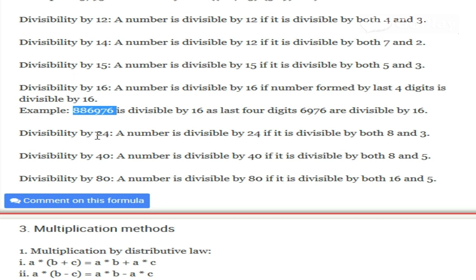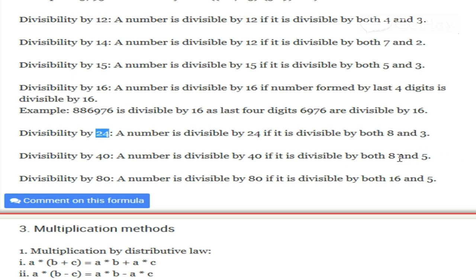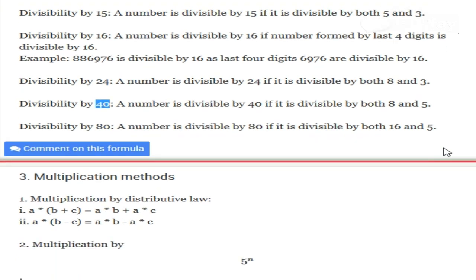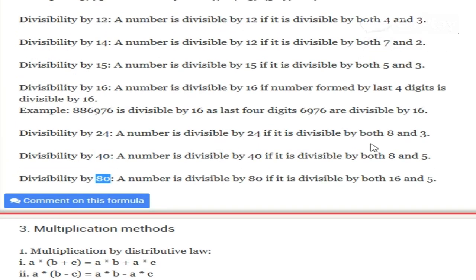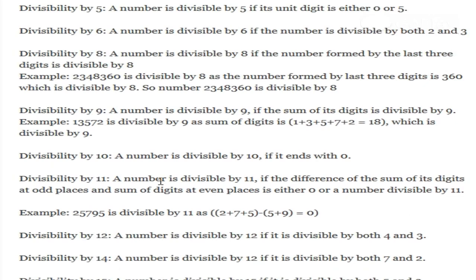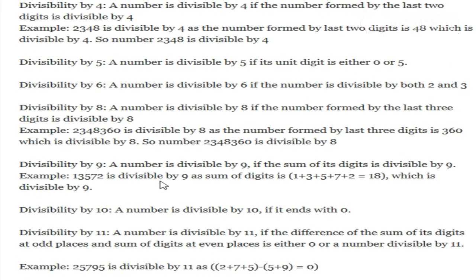To check if a number is divisible by 24, we check it for both 8 and 3. If a number is divisible by both 8 and 3, it will be divisible by 24, since 8 times 3 equals 24. For 40, the number should be divisible by both 8 and 5, since 8 times 5 equals 40. And if a number is divisible by both 16 and 5, it will be divisible by 80, since 16 times 5 equals 80. These are shortcut methods to check whether a number is divisible by a specific number and will save us time.